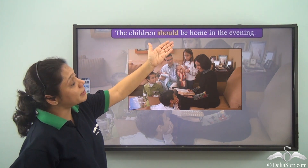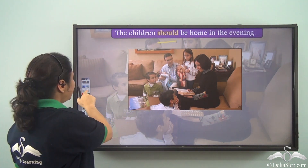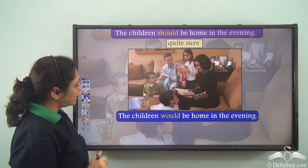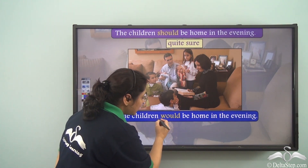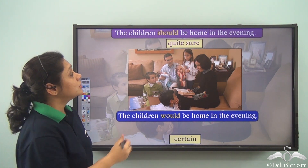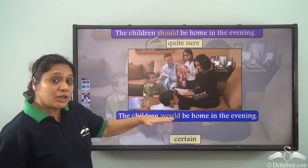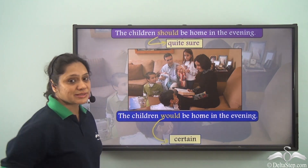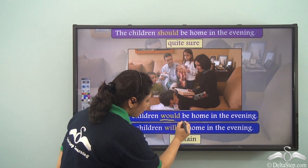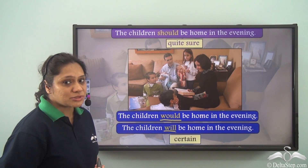The children should be home in the evening. When I say 'the children should be home in the evening,' 'should' is expressing that we are quite sure of them being home. But if we say 'the children would be home in the evening,' 'would' is expressing that we are certain of them being home. So 'should' means quite sure, while 'would' and 'will' are both used to express that we are certain about something in the future.